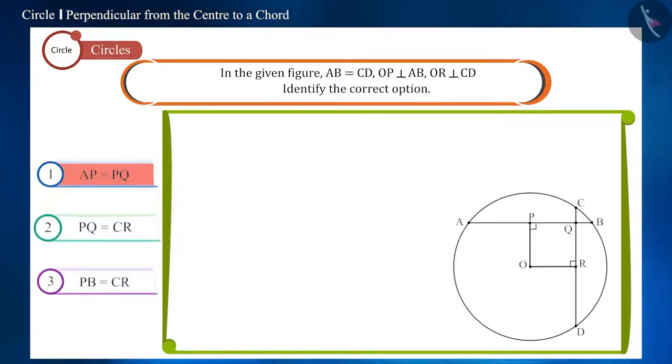Let's move ahead and see the second option. From the first option, we know that AP and PB are equal. And we are given that OR is perpendicular to chord CD. So, CR will be equal to RD because the perpendicular drawn from the center of a circle to a chord bisects the chord.